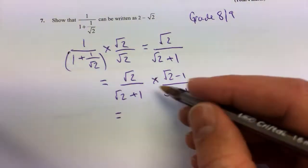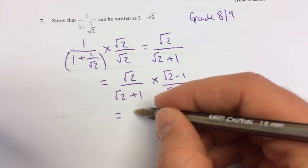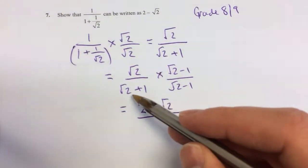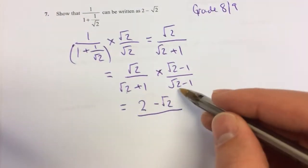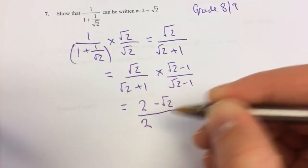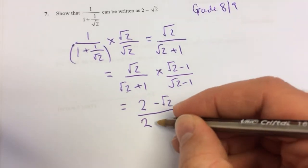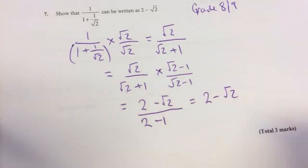That gives you 2 minus root 2 for your numerator. Because root 2 times root 2 will give me 2 minus root 2, over 1 as the bottom simplifies out. Just for the viewers, root 2 times root 2 will be 2, plus root 2 minus root 2 will cancel, and then I'll subtract that 1 which will give me 2 minus root 2 over 1.